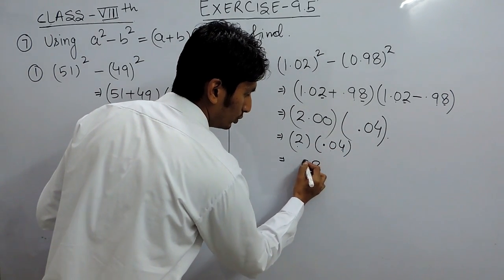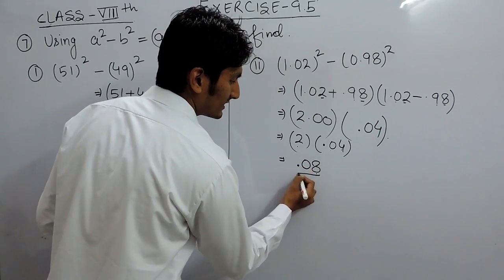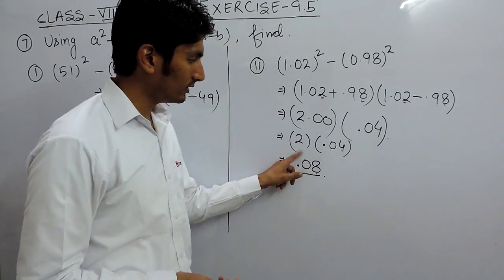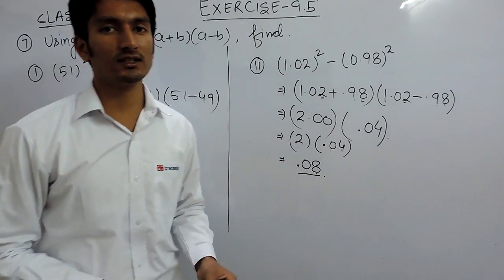So, I have to count 1, 2 and then I have to place the decimal. So, 0.08 should be the answer for this second part.